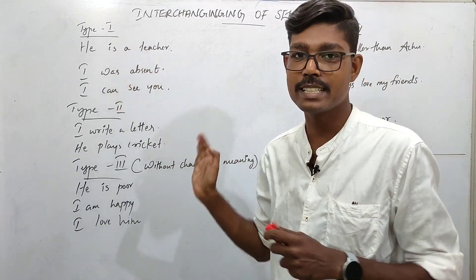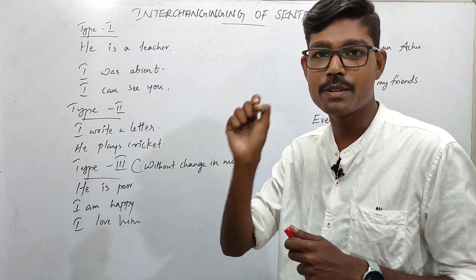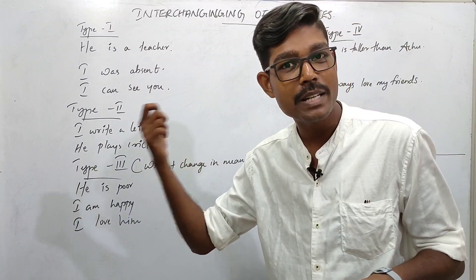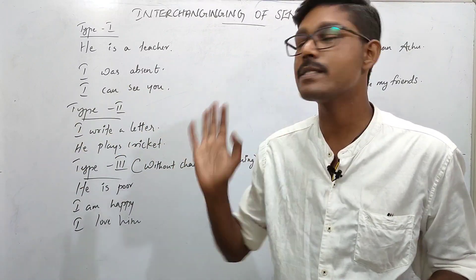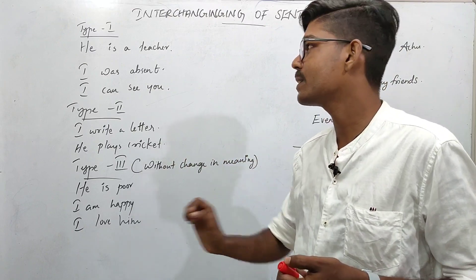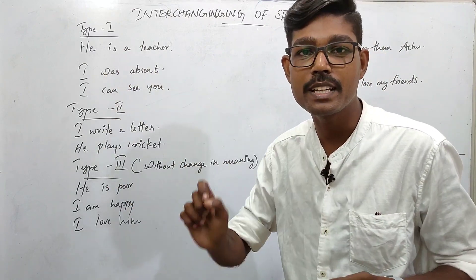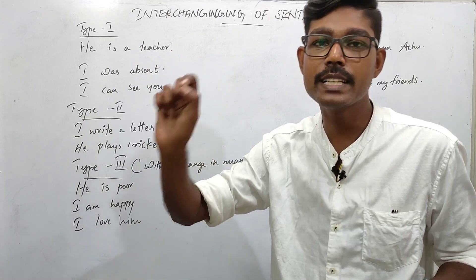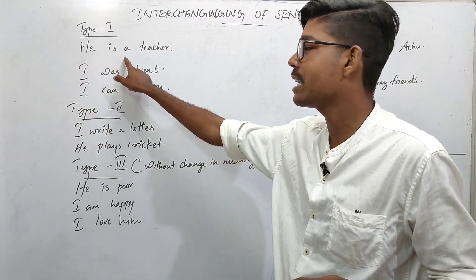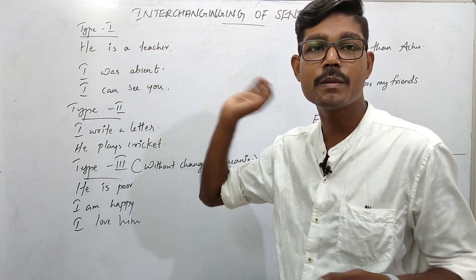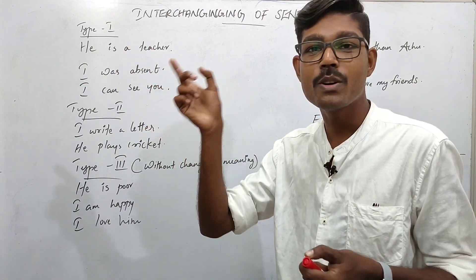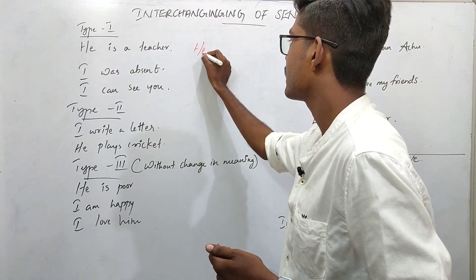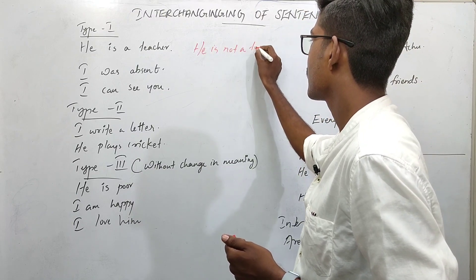The first example is: 'He is a teacher.' It's a statement — a simple sentence. If you have a negative one, we say: 'He is not a teacher.' He is negative — 'He is not a teacher.'